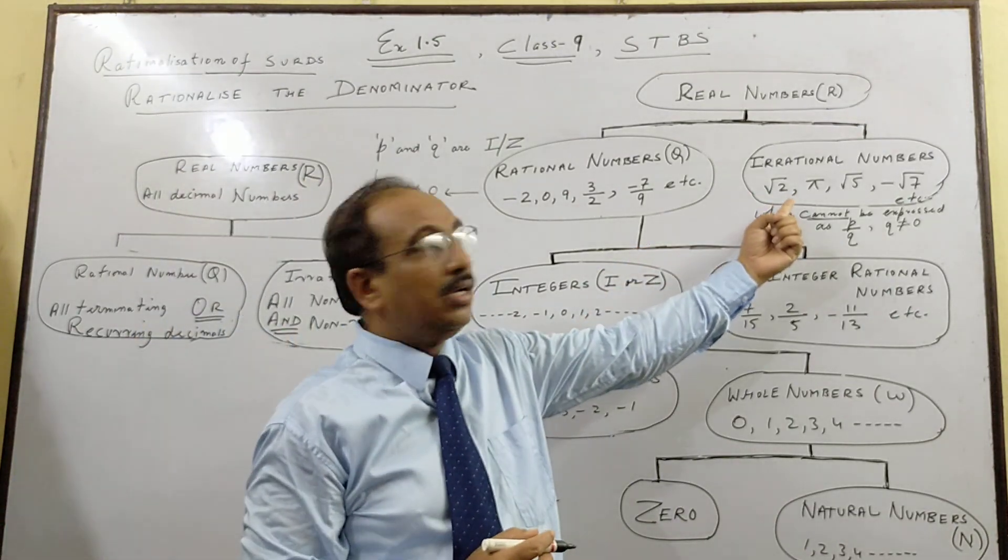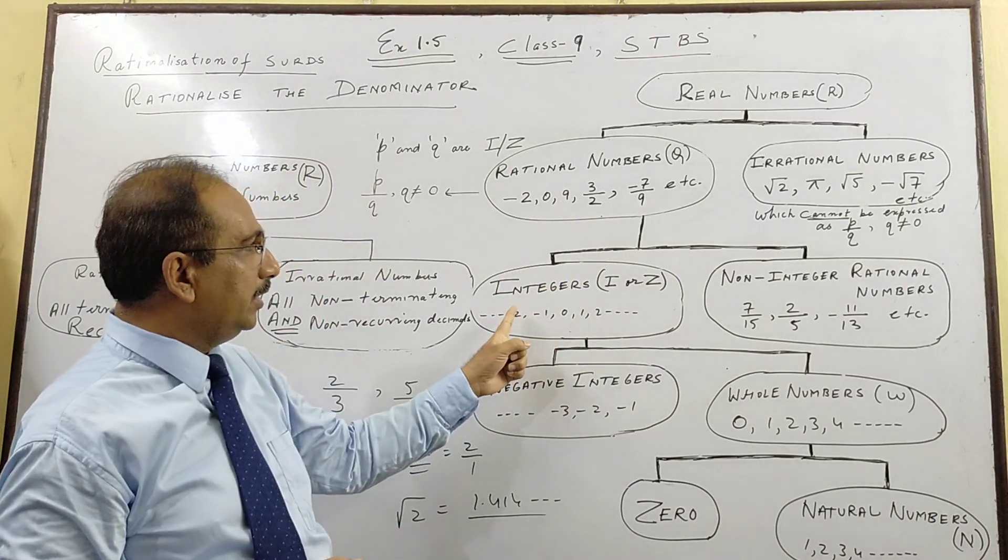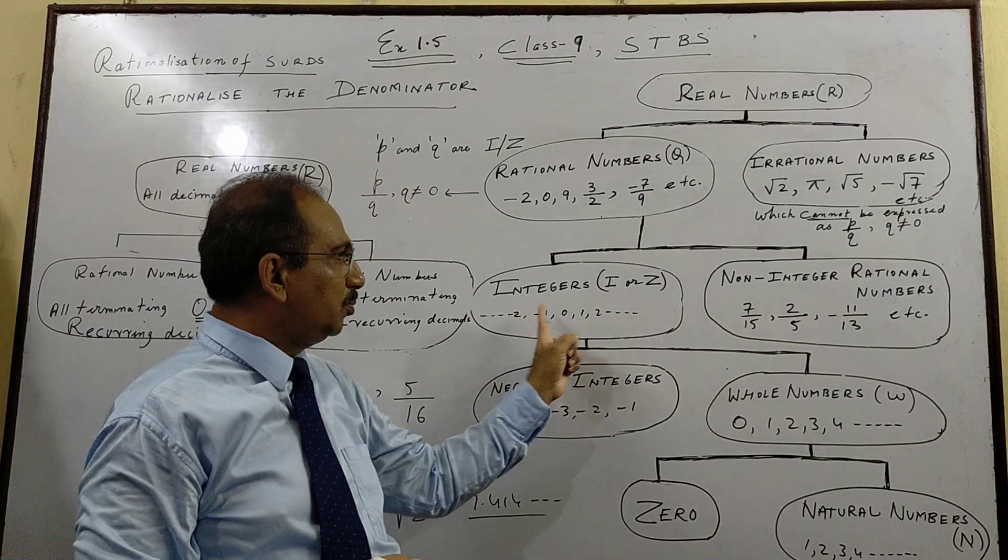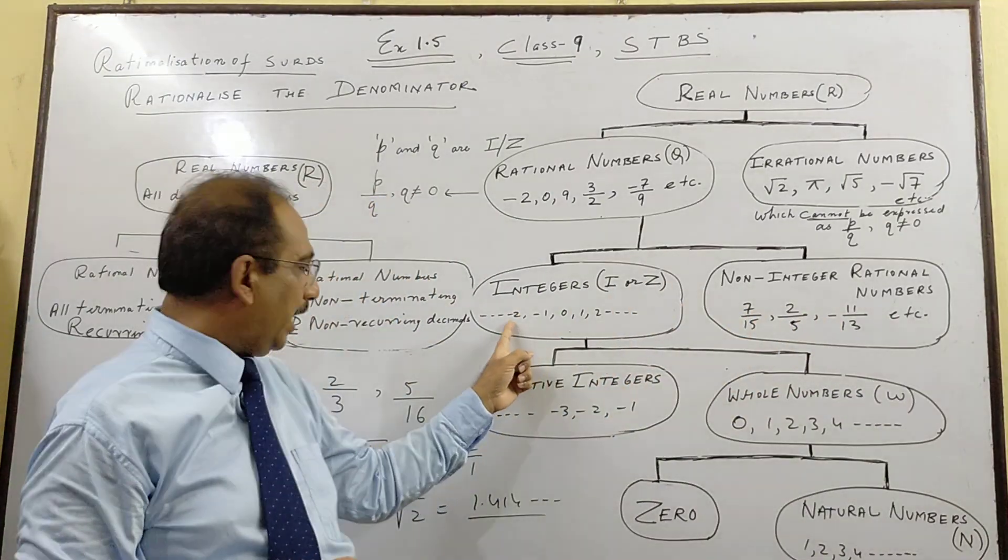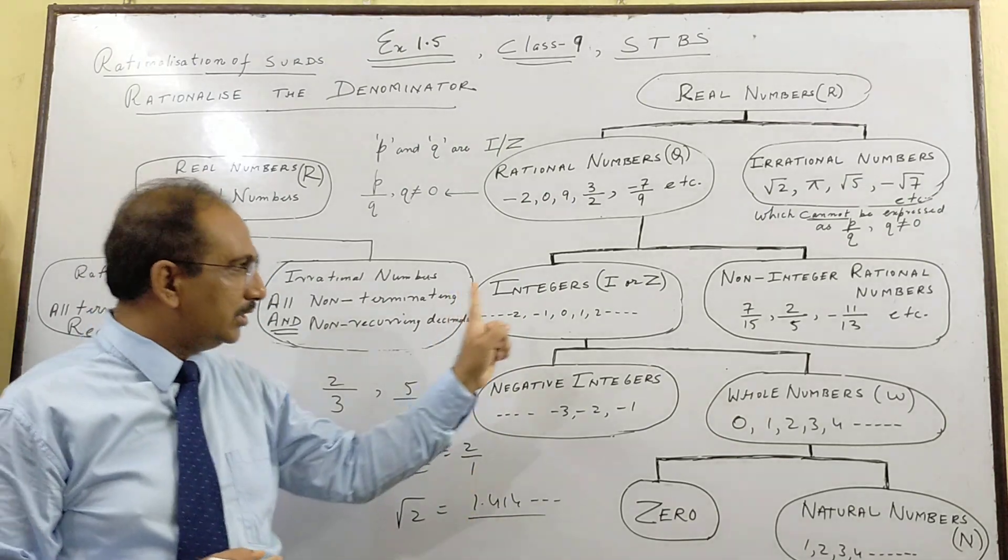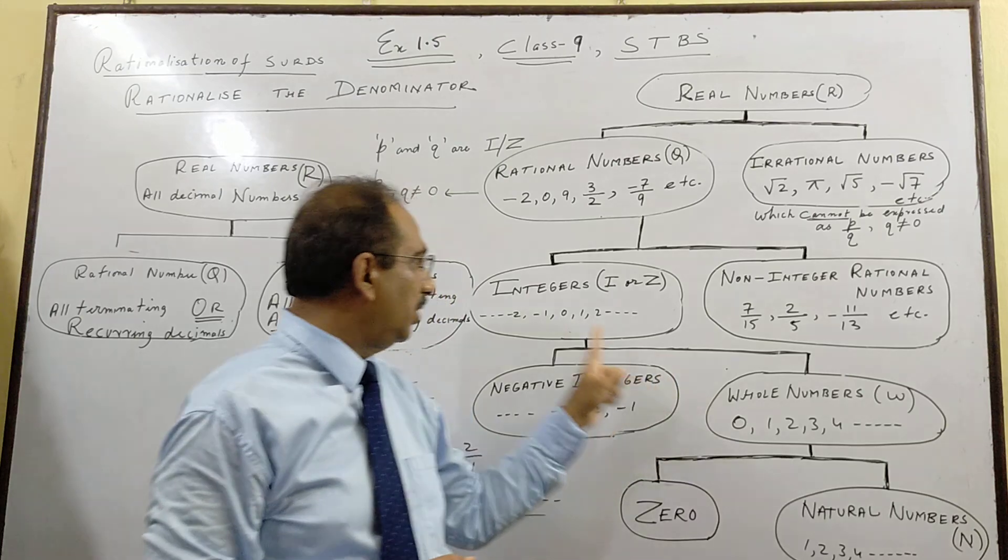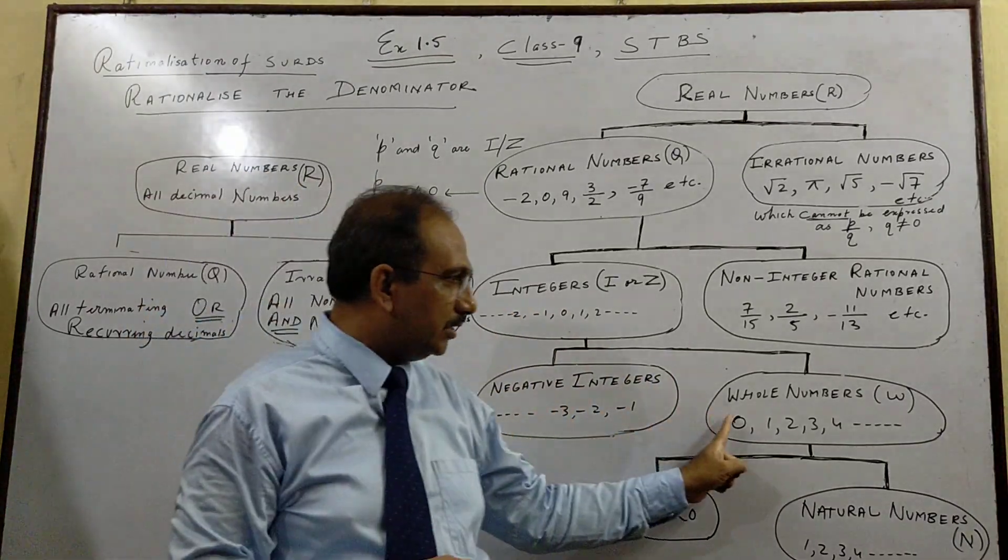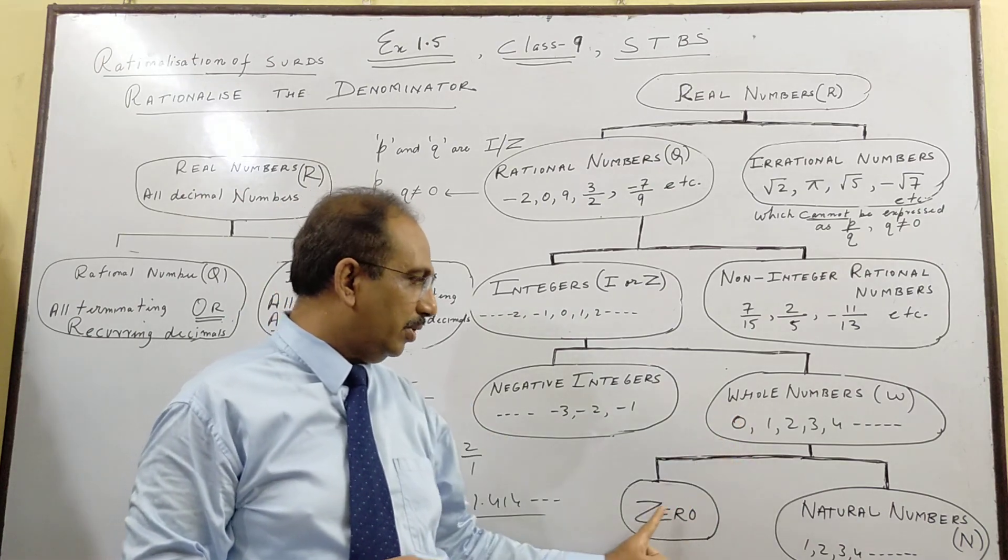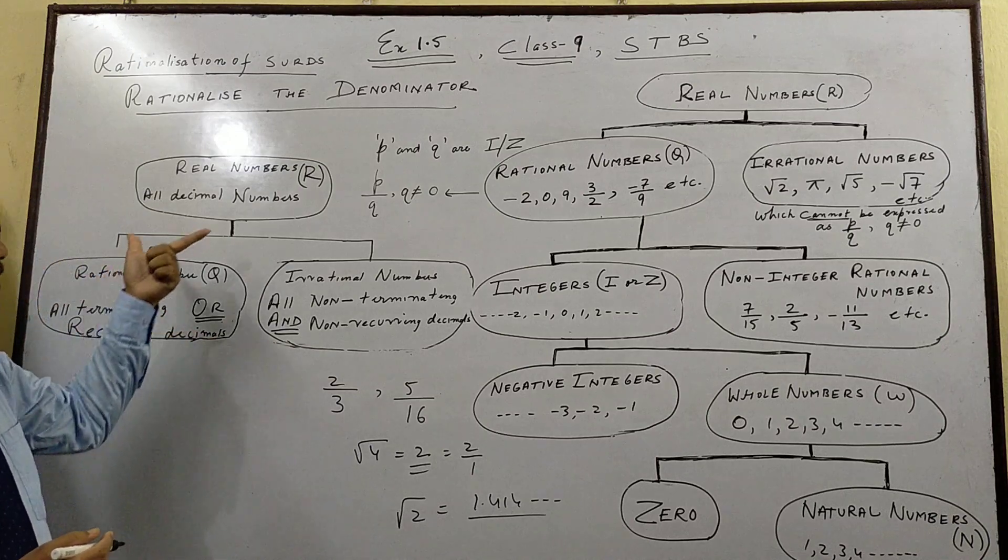So the rational number is divided into integer and non-integer rational numbers. Both are rational numbers. This is also a fraction whose denominator is 1. So this is also a rational number and this is also a rational number. And integers are divided into negative integers and 0 plus positive. This is called whole number set. And whole number if you divide, it's 0 and natural number.